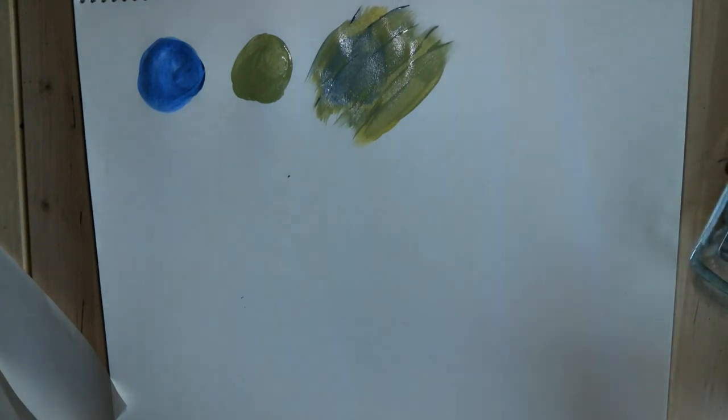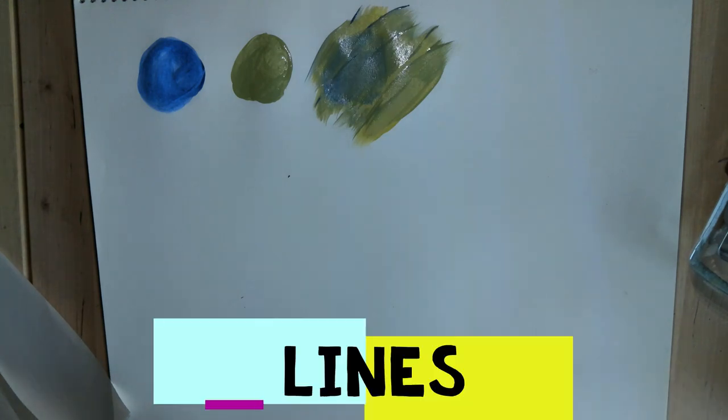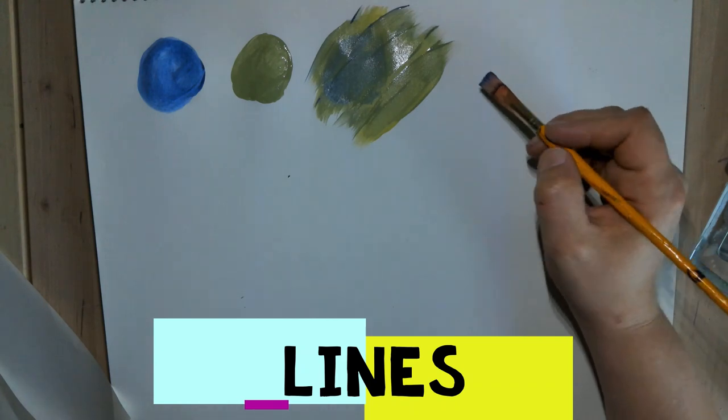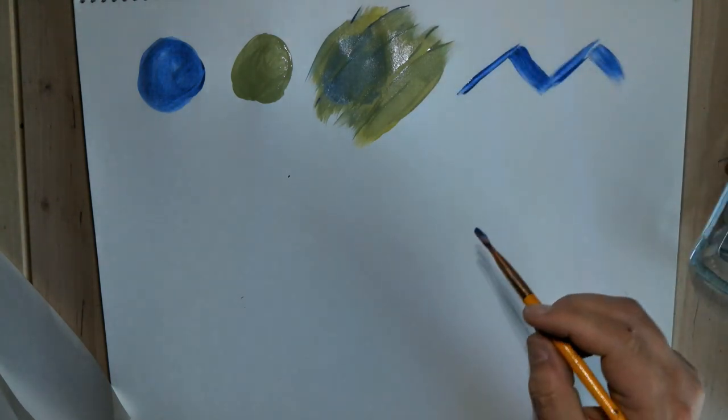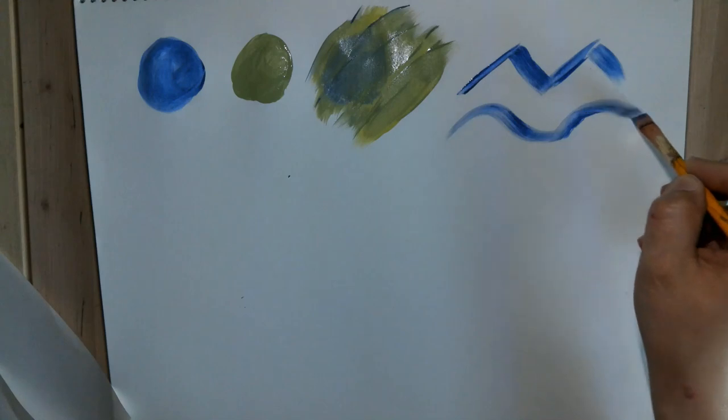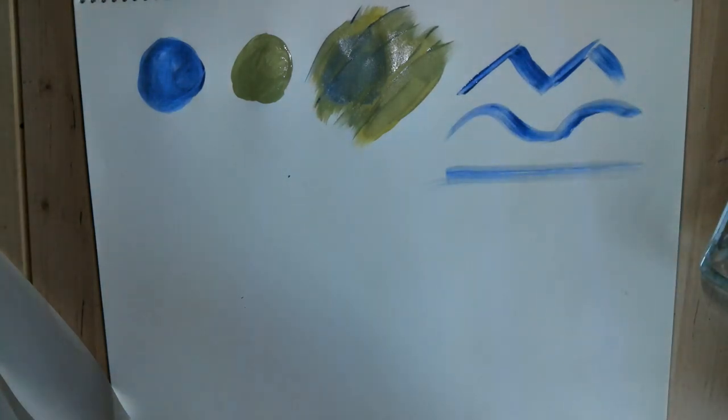Another technique for painting is called lines, and they are exactly what they sound like. That's when you take your paintbrush and you paint lines. They can be zigzaggy, they can be wiggly, they can be straight - it's just whatever type of line you want to make.